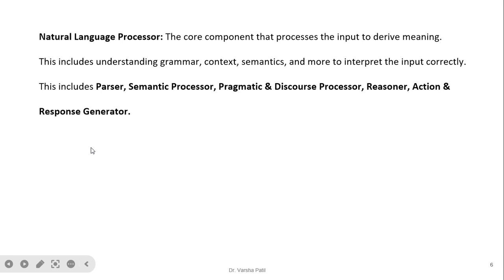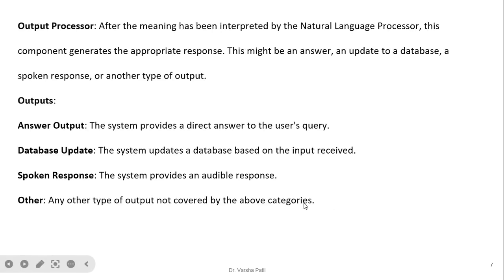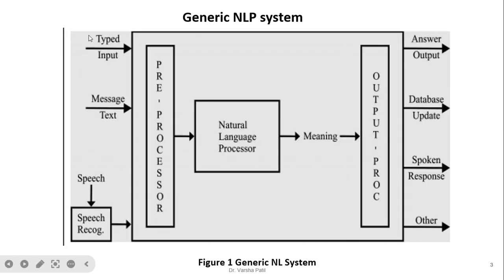Natural language processor: this is the core component that processes the input to derive meaning. It includes understanding grammar, context, semantics, and more to interpret the input correctly. It includes the parser, semantic processor, pragmatic and discourse processor, reasoner, and action and response generator. The steps included in the natural language processor will be discussed in detail after the output processor.